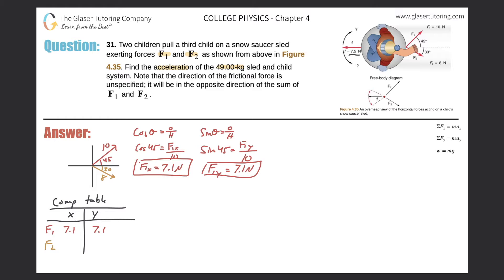Now for F2: it also has both x and y components. The x component is positive, but the y component is negative — keep that in mind. To find the x component, we use cosine again. Cosine of 30 equals F2x over 8, so F2x equals cosine of 30 times 8, which gives 6.9 newtons. Plug 6.9 into the table.